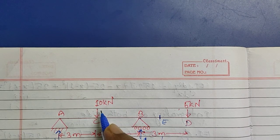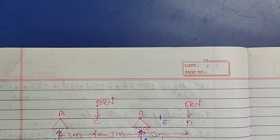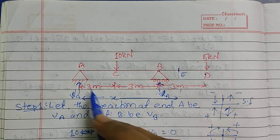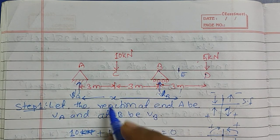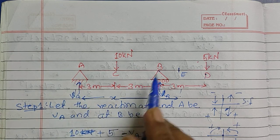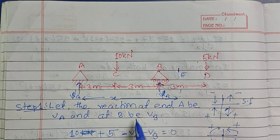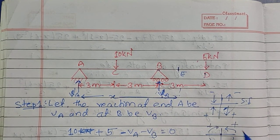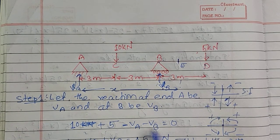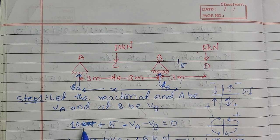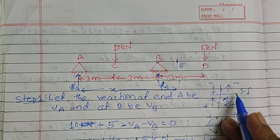I hope this video is helpful for students studying structural analysis. In step one, we first need to find the reactions at supports A and B. I have assumed the reaction at support A is VA and at support B is VB. We will use the sign convention for shear force and moment.